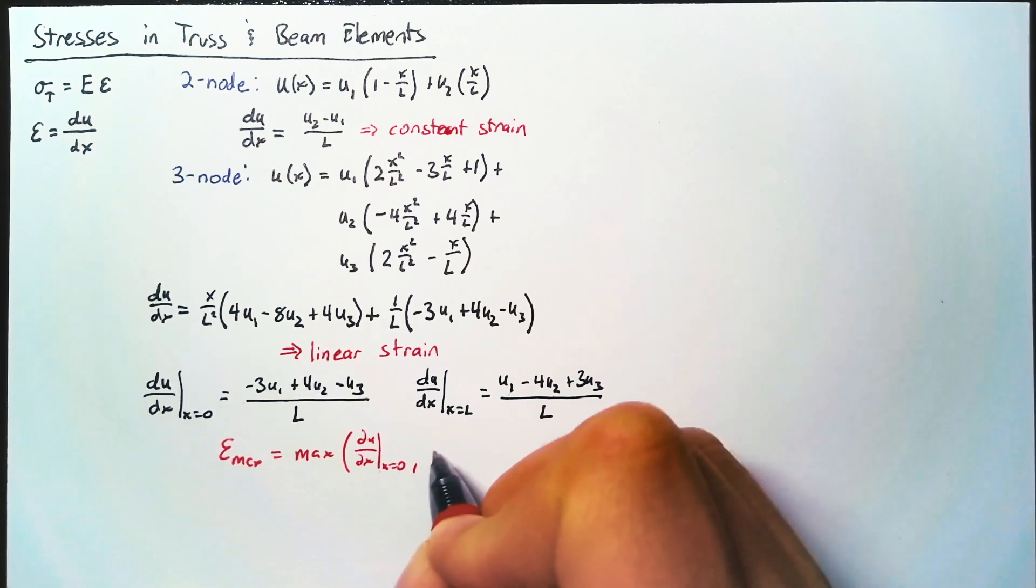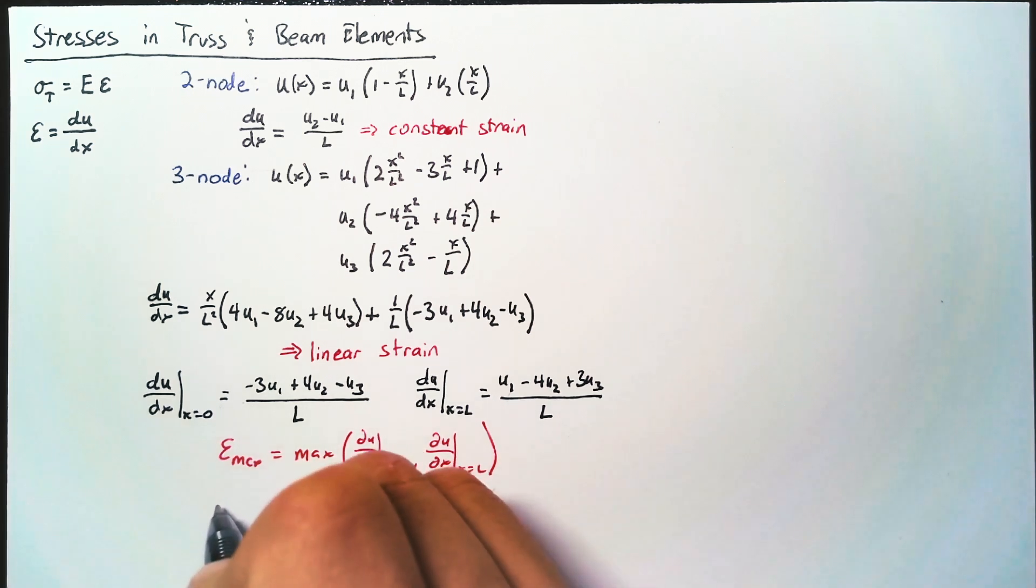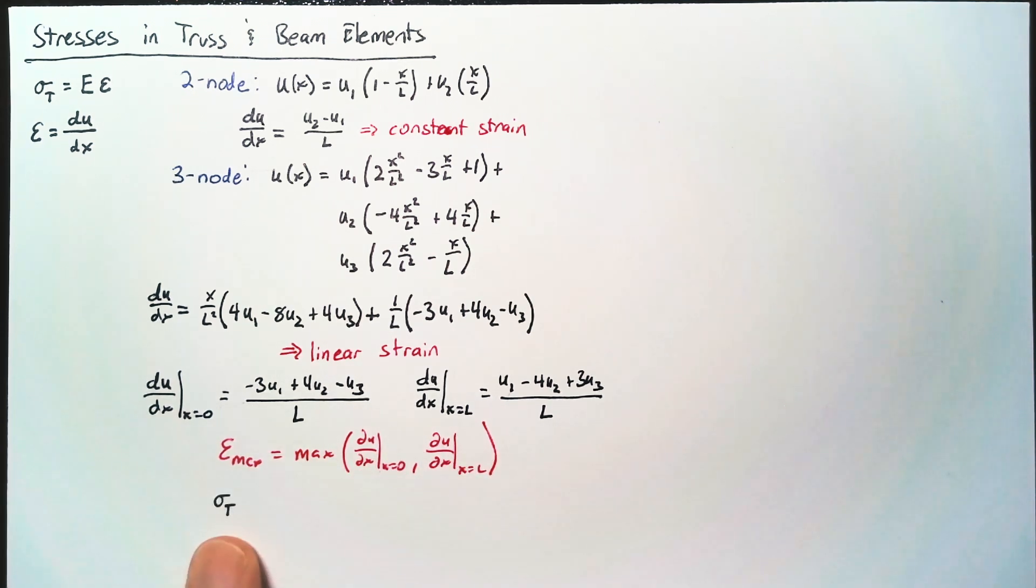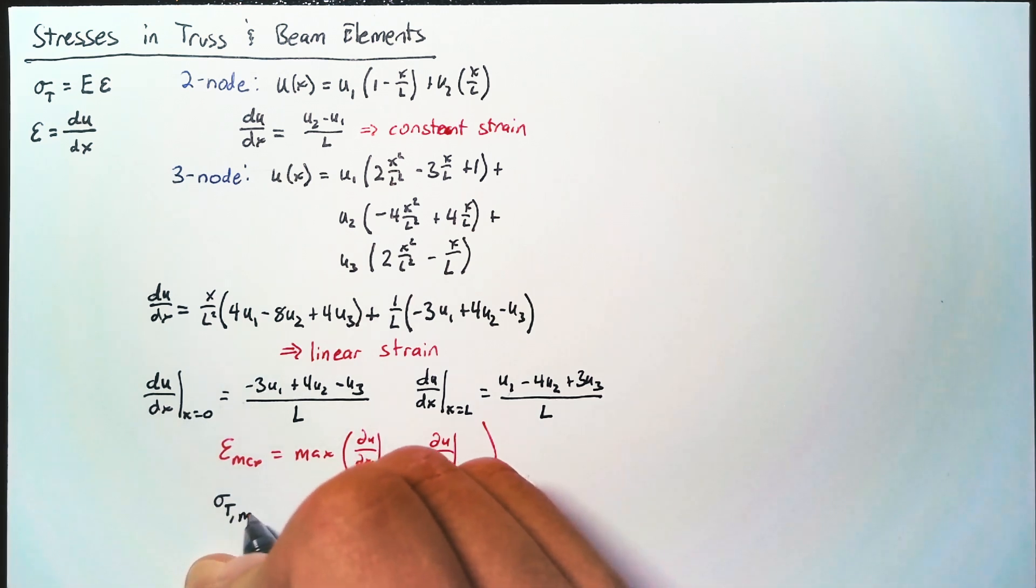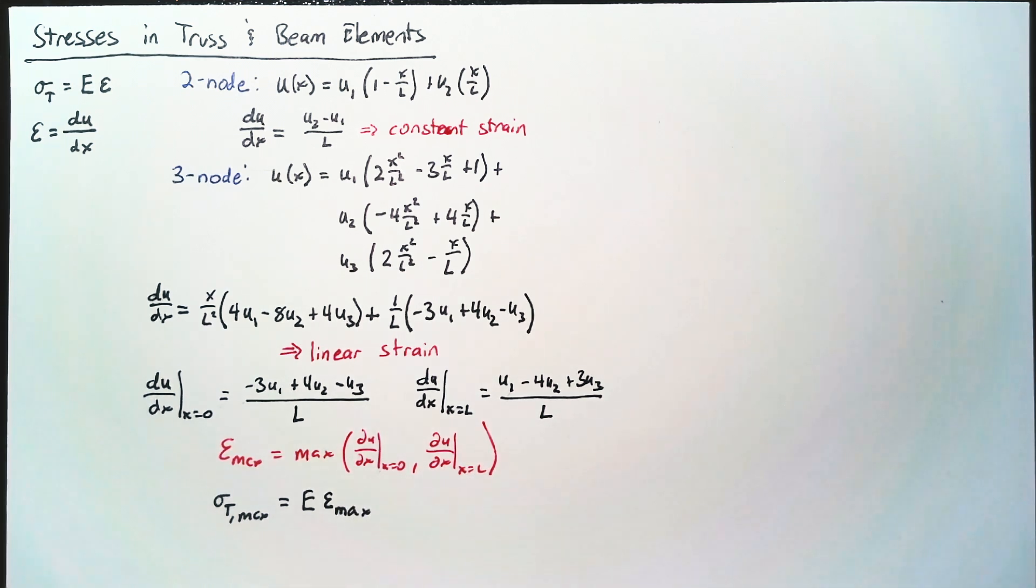We can say that our epsilon max is simply the maximum of these two values. I guess it's the maximum absolute value, either the maximum or the minimum value, depending on what sign we're looking at. And then our maximum stress is equal to the Young's modulus multiplied by that epsilon max term. And if we're just interested in the absolute value, we can take the absolute value of everything and then just find the maximum stress, whether that is compressive or tensile.